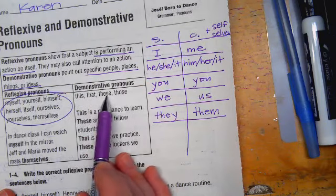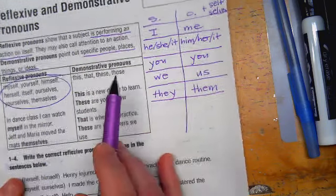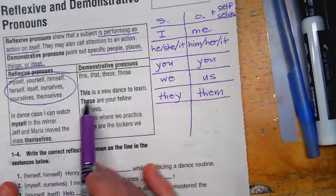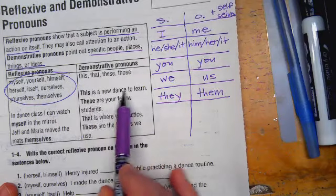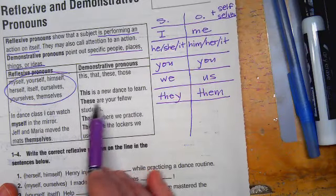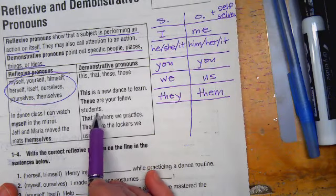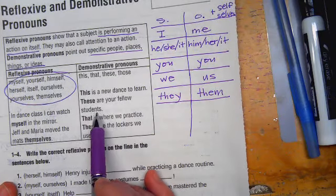These are demonstrative pronouns: this, that, these, and those. So an example would be: this is a new dance to learn. These are your fellow students.